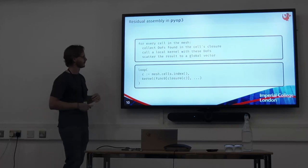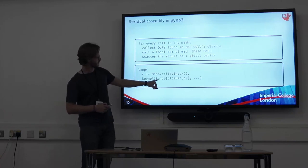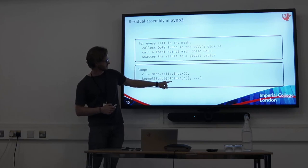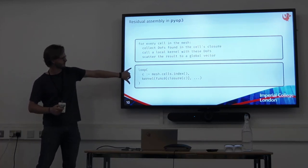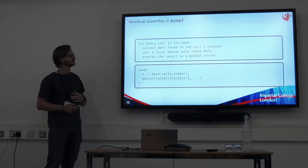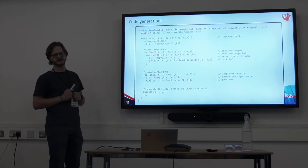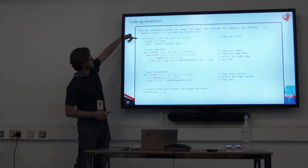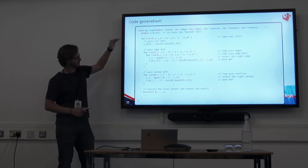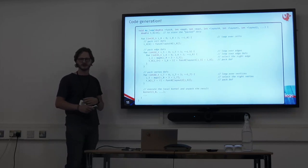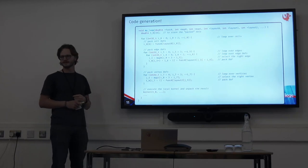In PyOP3 you would write this like this: a loop over cells from the mesh, calling some kernel, and as an argument to the kernel I have my function where I pass in entries from the closure of that given cell. I write this in PyOP3, I've already defined what func0 is and all my data layouts, and now we're able to generate code. It's really ugly — I don't expect you to read it — but we have our loop over cells, our temporary with 10 numbers, we pack our cell DOFs, edge DOFs, vertex DOFs, then call our kernel, and unpack it. We can target this at C or CUDA.